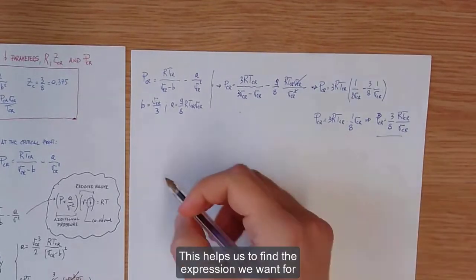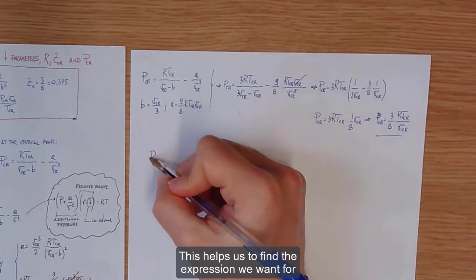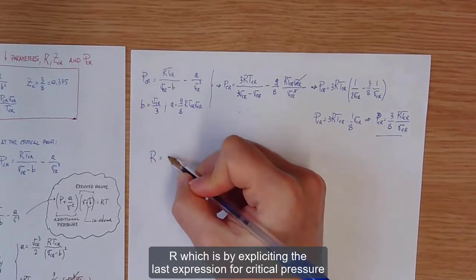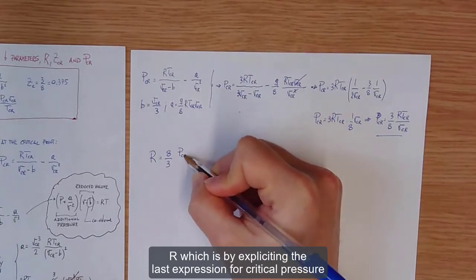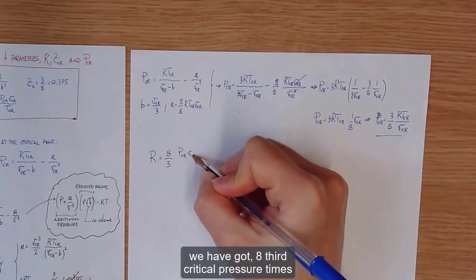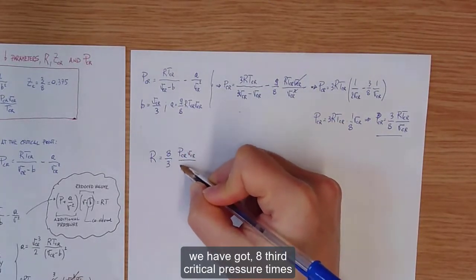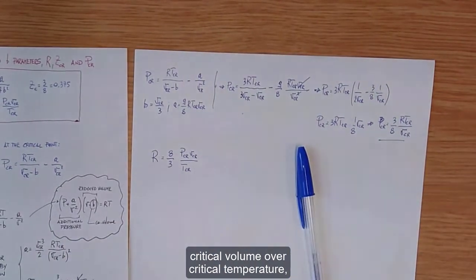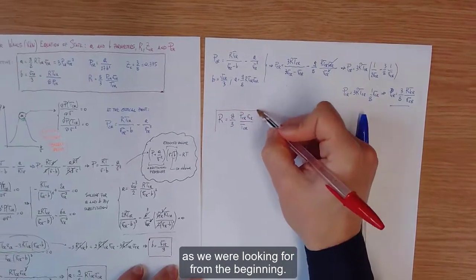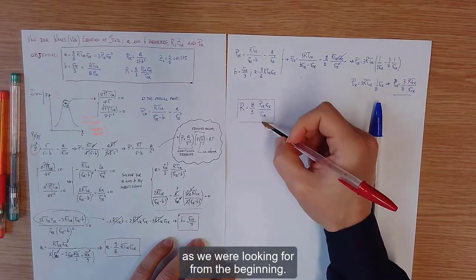This helps us to find the expression we want for R, which is by expliciting the last expression for critical pressure. We have got 8/3 critical pressure times critical volume over critical temperature, as we were looking for from the beginning.